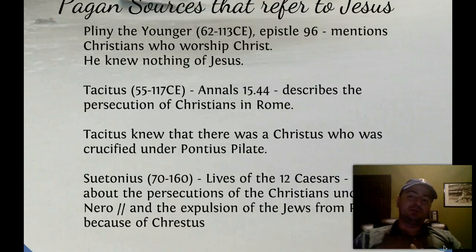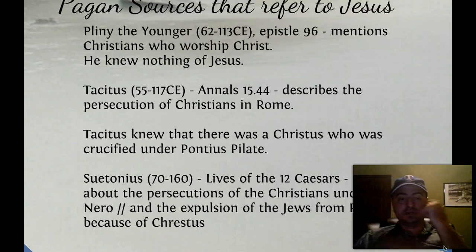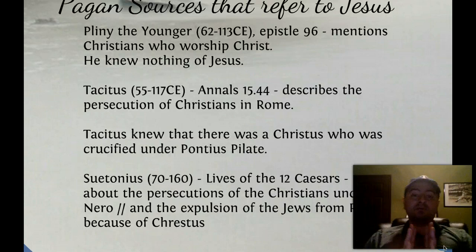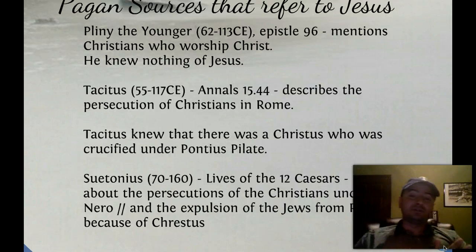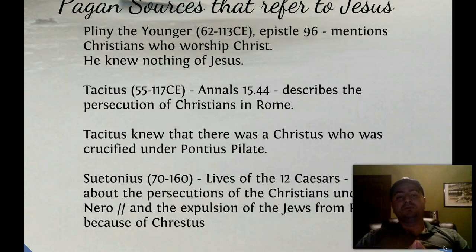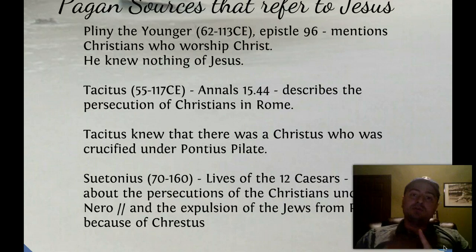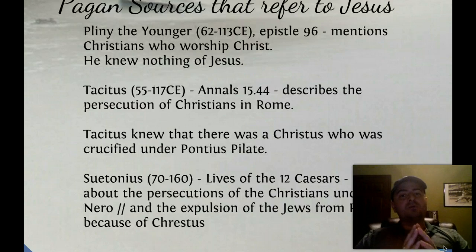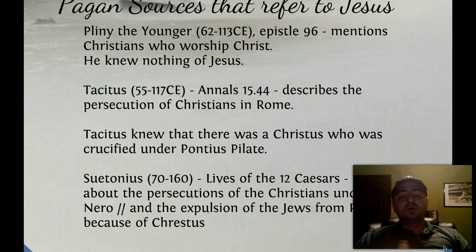There are also pagan sources that refer to Jesus, or more specifically to the early Christians. Pliny the Younger — his Epistle 96 mentions Christians who worship Christ, but he knew nothing of Jesus. He couldn't tell the difference between Christians, Jesus followers, and Jews. But he knew there was a new religion, and Romans did not like that — they liked only ancient religions. He was the governor of a province of Rome, and he brought in two female slaves who were Christians and tortured them to find the rest of the Christians so he could put them to death.